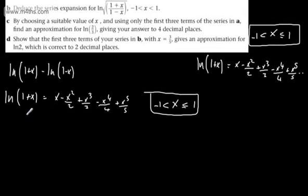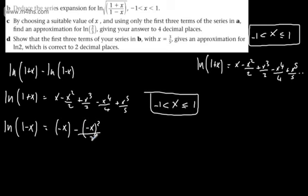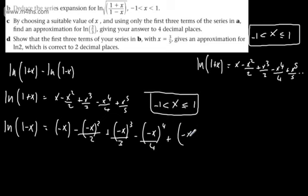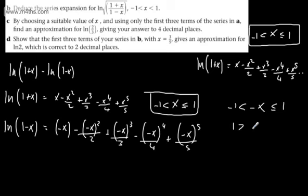If we now take the expansion of ln(1−x) — we looked at this in a previous video — all we're doing is swapping x for −x. So we get −x − (−x)²/2 + (−x)³/3 − (−x)⁴/4 + (−x)⁵/5 ... Now let's consider the interval: we need −x to be strictly greater than −1 and less than or equal to +1. Dividing through by −1 and flipping the inequalities gives us x ≥ −1 yet x < +1.